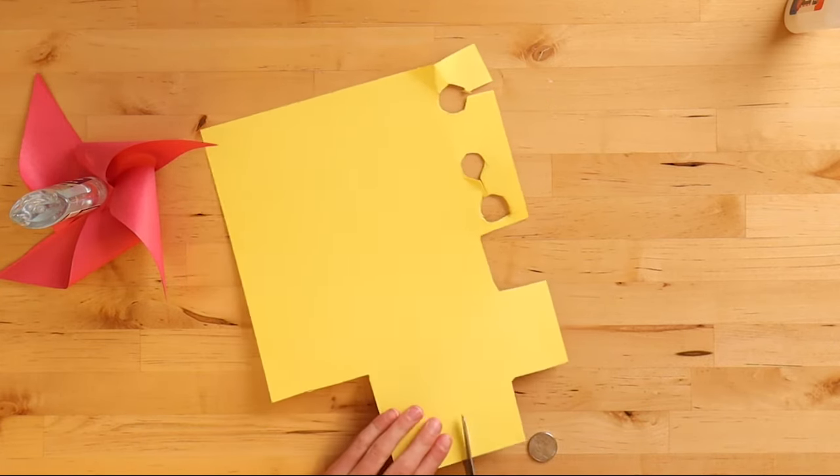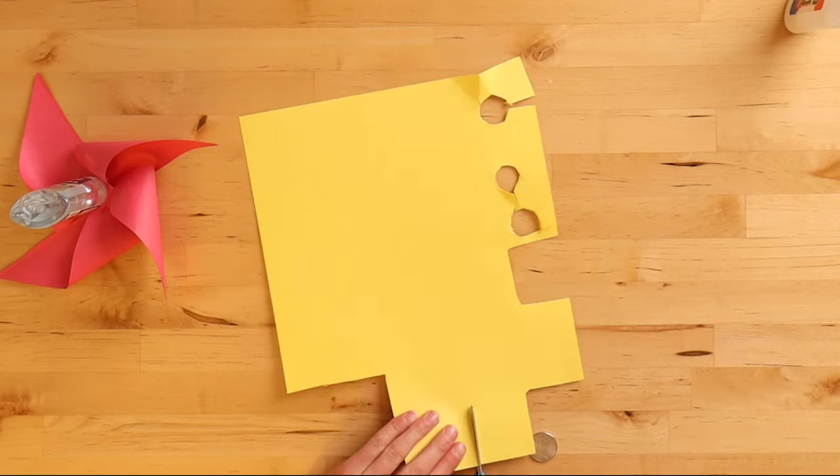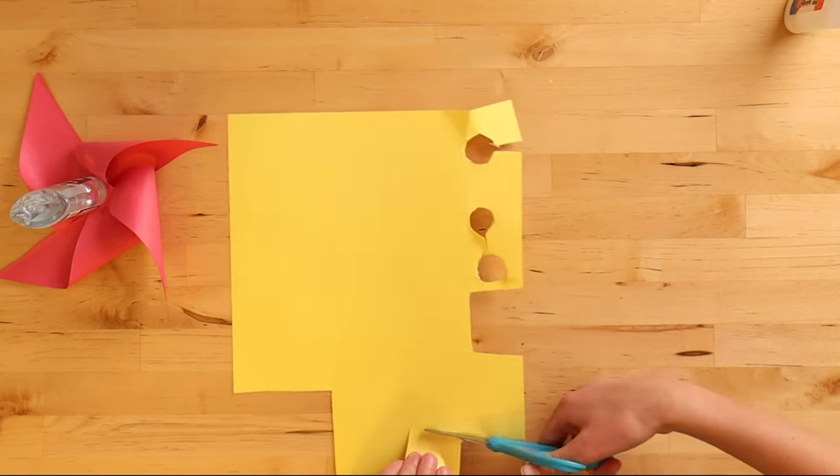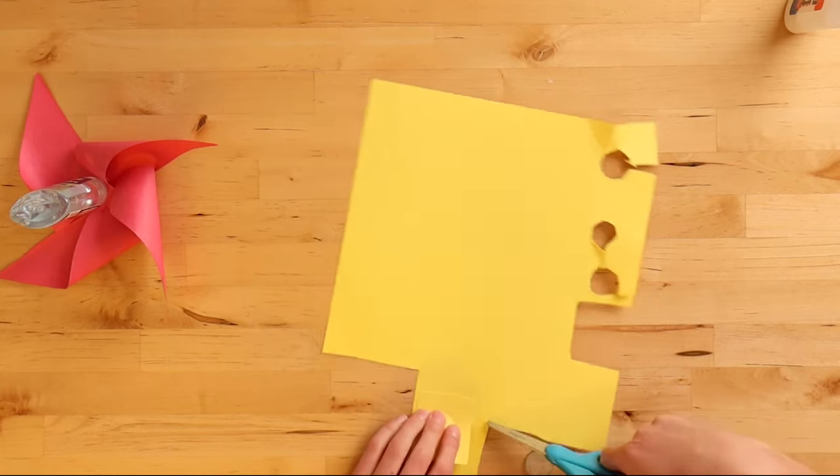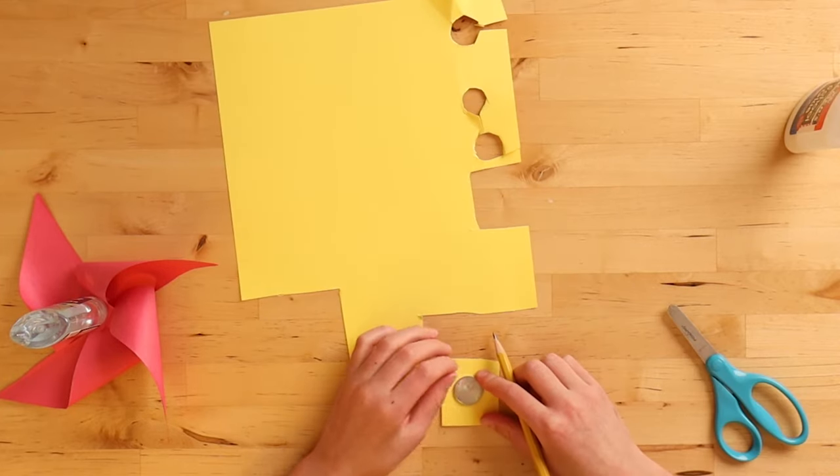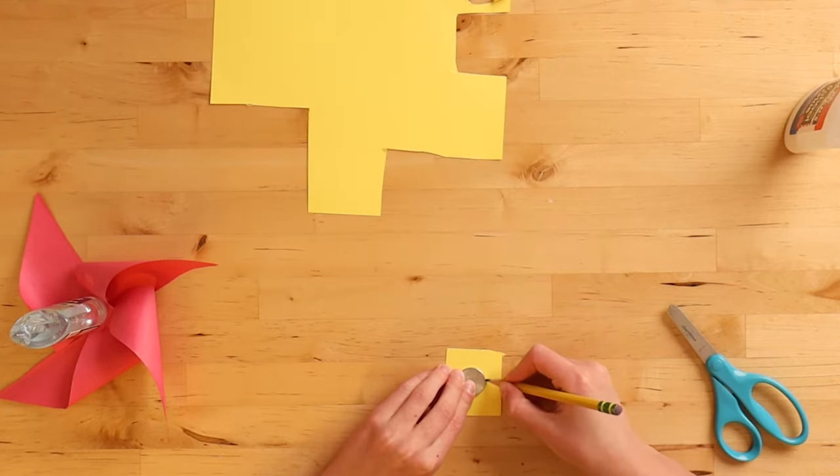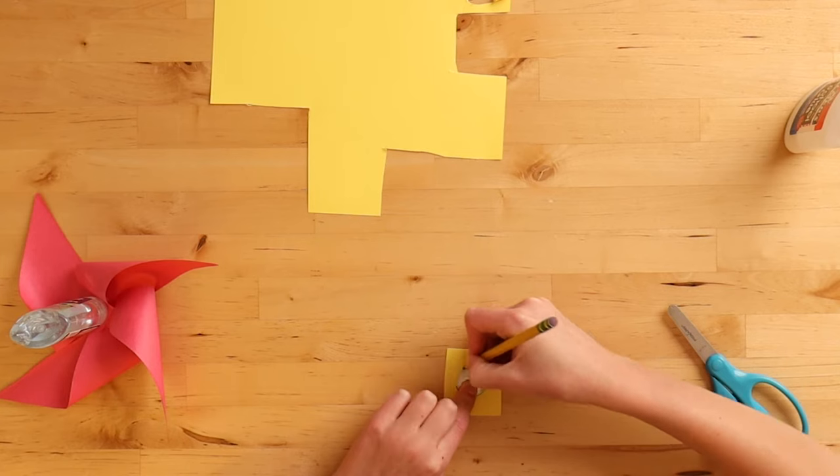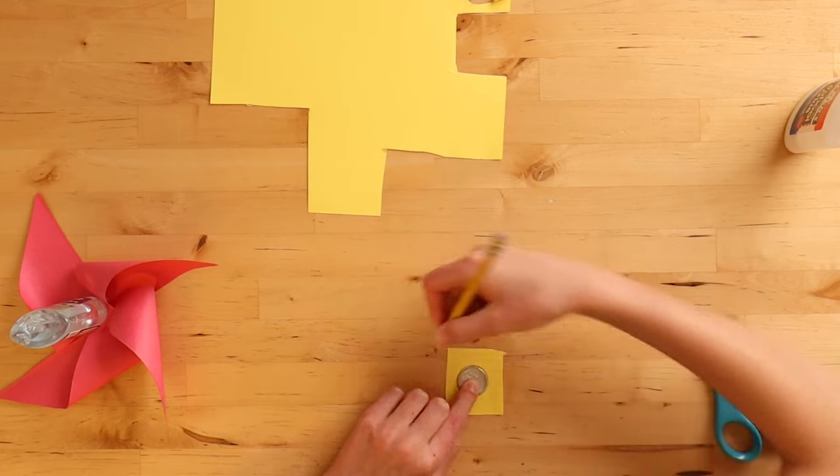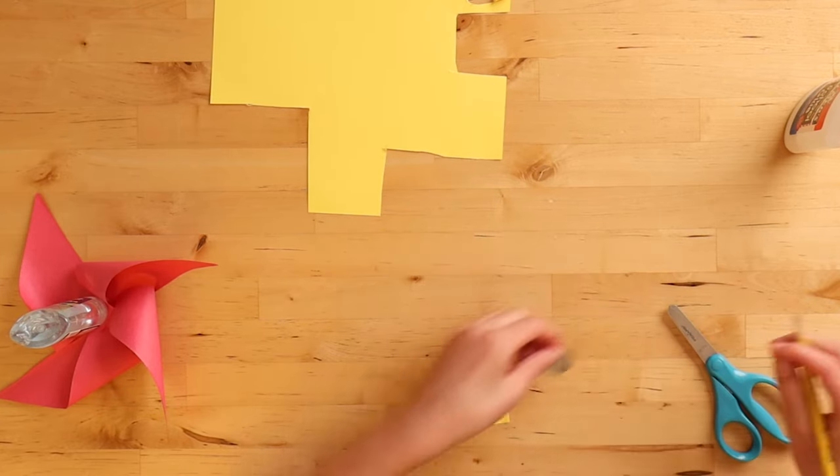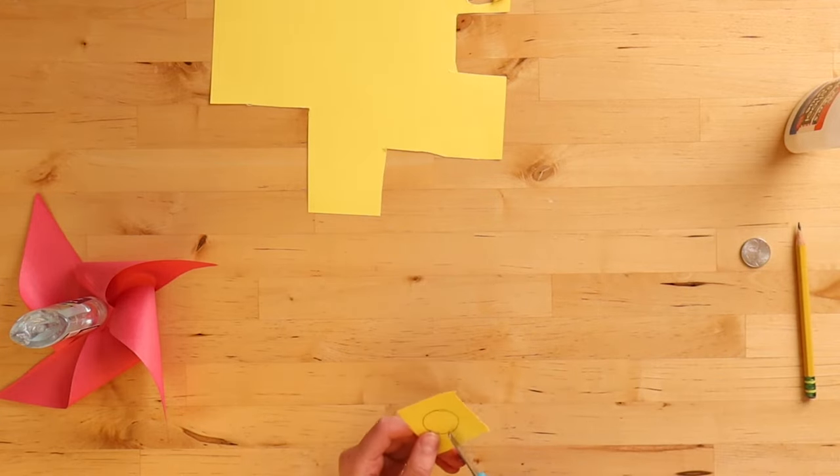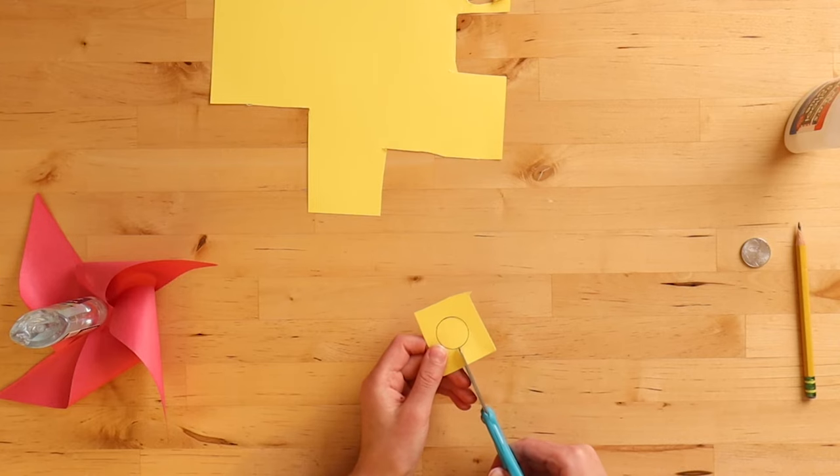So I like to cut out just a little square so it's easier to flip and turn around while cutting your circle. You're going to put your coin and do the outline of that coin. There, you have your circle. Put the coin aside and then you're going to cut out that circle with your scissors.